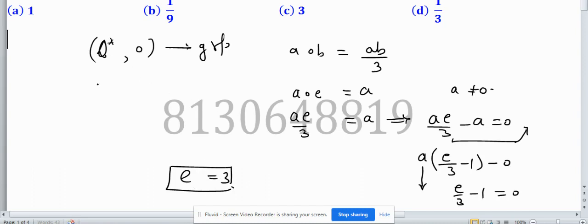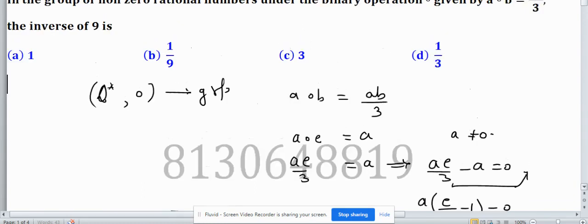To find the inverse of 9, consider an element a from the group, which is the set of nonzero rational numbers with this binary operation. The inverse of 9 is the element a such that on operating these two elements, it will return the identity, which is 3.